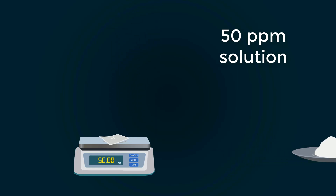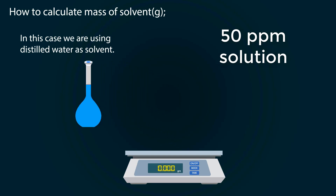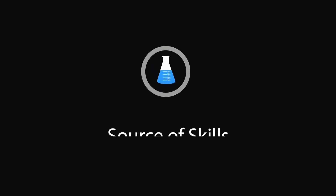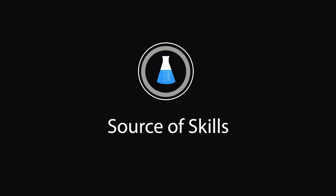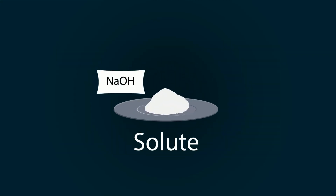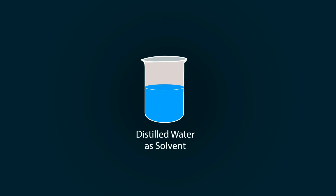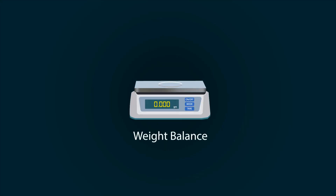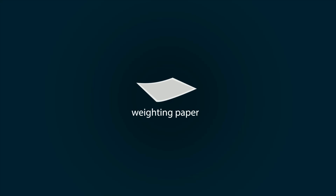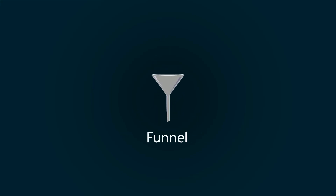In this video you will learn how to prepare a 50 ppm solution of any solute. Welcome to our YouTube channel Source of Skills. Please like and subscribe our channel for informative videos. Required parameters and chemicals include a solute, a spatula, distilled water as a solvent, a weight balance, weighing paper, a volumetric flask of 1000 milliliters, and a funnel.